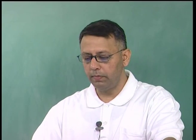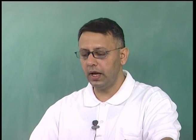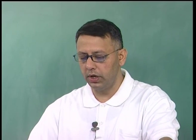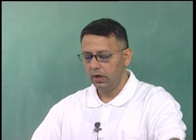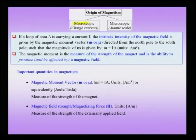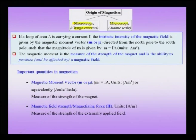What are the origins of magnetism? Anyone who has played with magnets knows that a current-carrying conductor, typically in the form of a solenoid, produces a magnetic field. There are macroscopic origins of magnetism from charge currents. The other magnetism we will focus on in this course is the microscopic origin coming from the atomic scale.